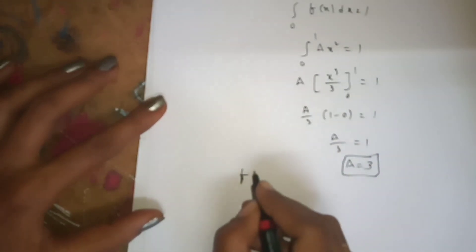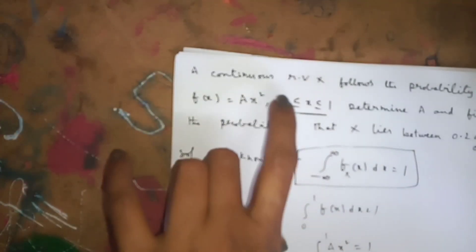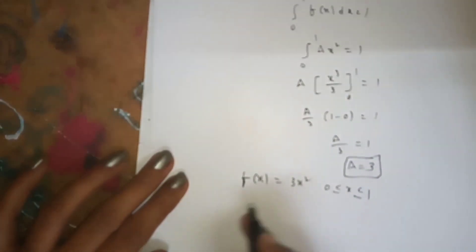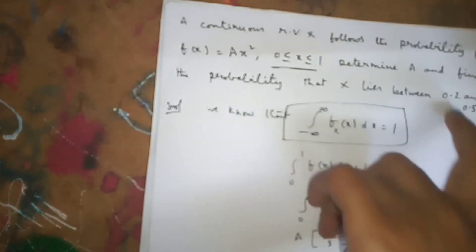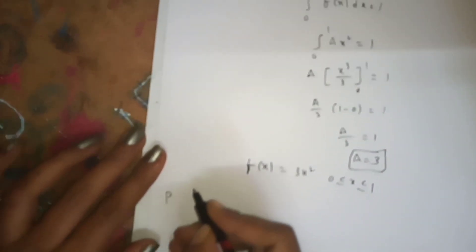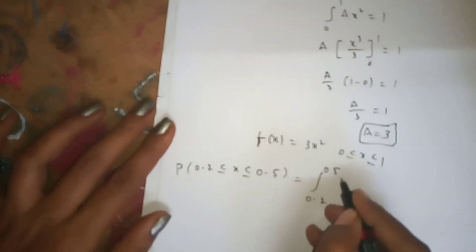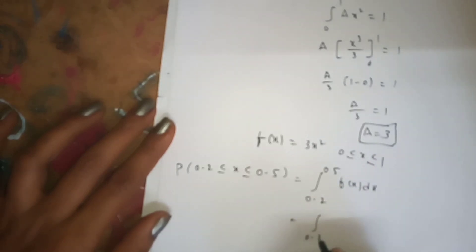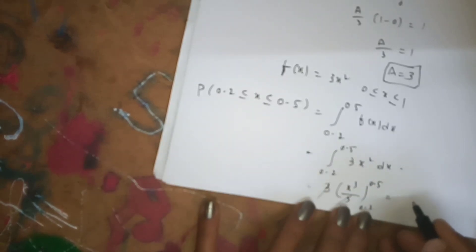Substituting a = 3, the function becomes f(x) = 3x² for 0 ≤ x ≤ 1. Now to find P(0.2 ≤ x ≤ 0.5), we integrate f(x) from 0.2 to 0.5: the integral of 3x² dx from 0.2 to 0.5 equals 3 times x³/3, evaluated from 0.2 to 0.5. The 3's cancel, and applying the upper minus lower limits gives 0.117 as the answer.